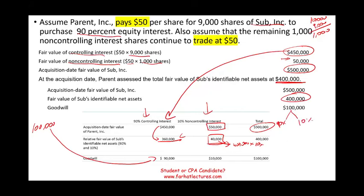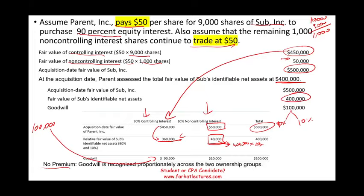This proportional allocation happens because we did not pay a premium. We paid $50 and the non-controlling interest stock is also valued at $50. That's not always the case, as we'll see in the next example. Here, there is no premium, so the goodwill is recognized proportionally.